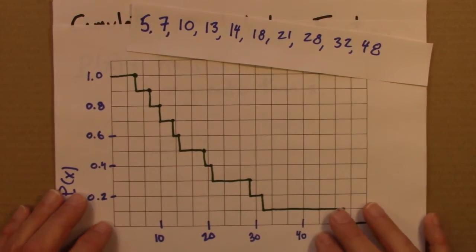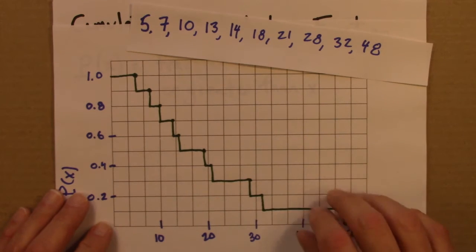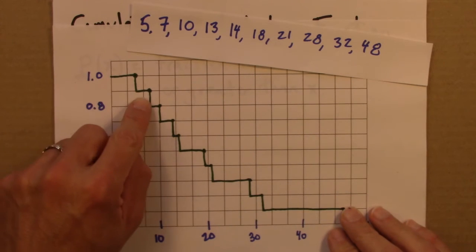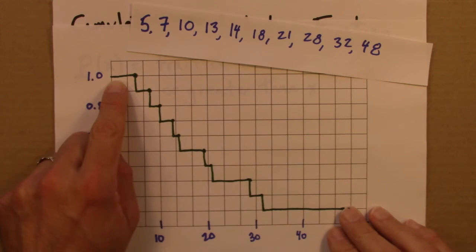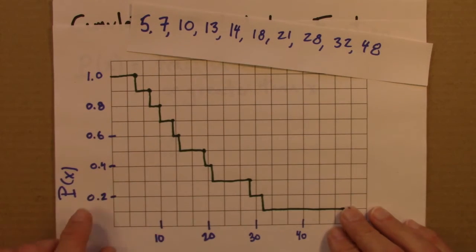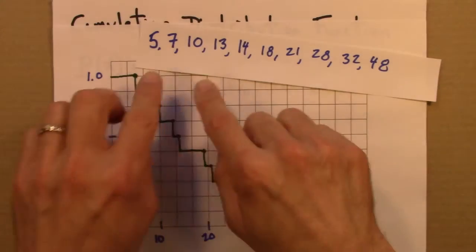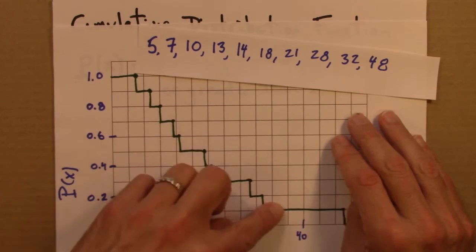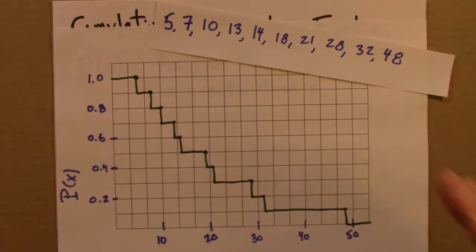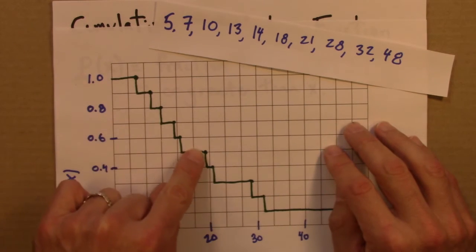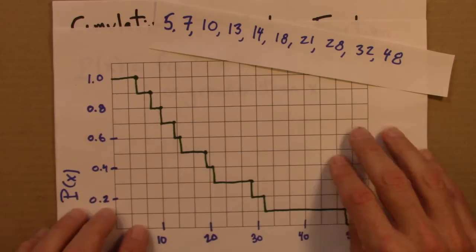Okay, so let me say a little bit about some of the general properties of a cumulative distribution function like this. First, we can see, I think, from its construction, that this function can never increase. It can stay flat, or it can decrease. As we kind of move to the right, we're always excluding more of the data, and so this fraction is always going to go down. Again, if you had 100 or 1000 data points, this would look less like a staircase and a lot more like a smooth function. There wouldn't be as many visible steps in it, typically.